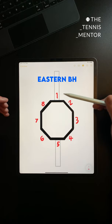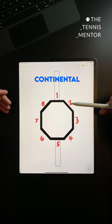Bevel number two is the continental or chopper grip and this is a versatile grip used for serves, volleys, overheads, sliced backhands and double-handed backhands.